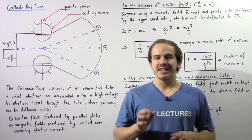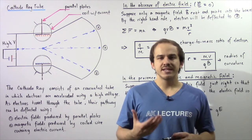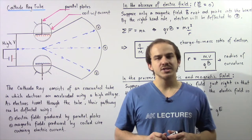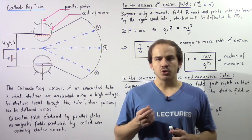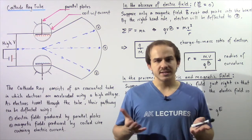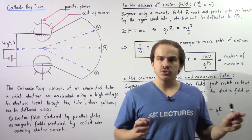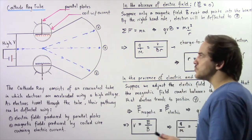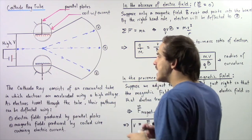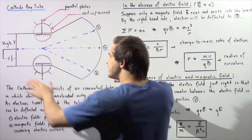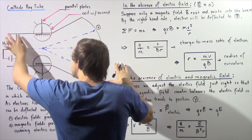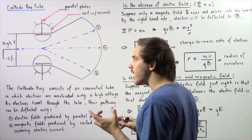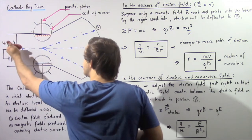In this lecture, we're going to examine an important instrument that essentially allowed us to study the properties of electrons. This instrument is known as the cathode ray tube. A cathode ray tube is essentially a particle accelerator — it allows us to accelerate electrons through a region of space. On the left end of our tube, we have a high voltage difference, and as a result of this high electric potential difference, electrons are accelerated through that region of space.